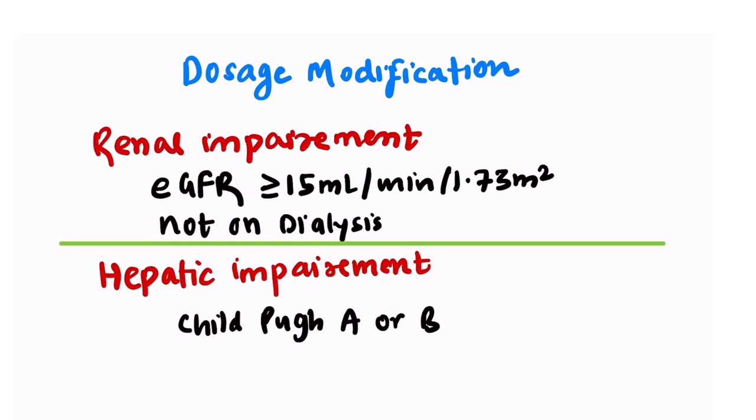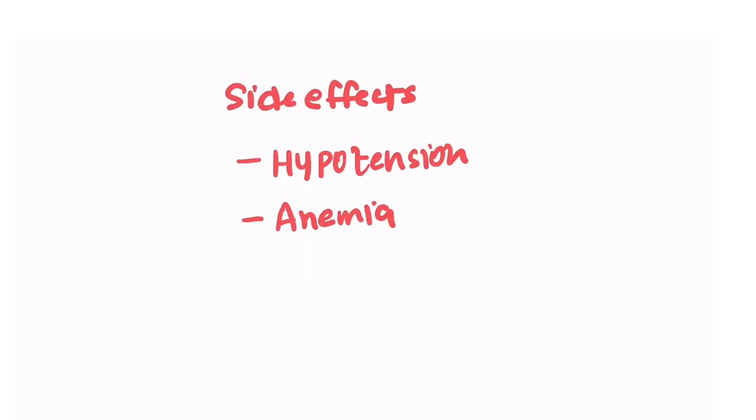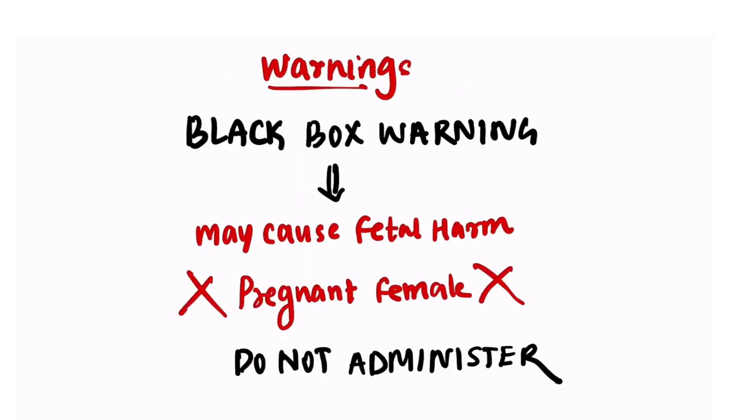There are two important side effects of this drug: hypotension and anemia. Now, the drug comes with a black box warning that it may cause fetal harm and should not be used in a female who is pregnant. So before starting the drug, if the patient is young and in reproductive age, you should always rule out pregnancy.